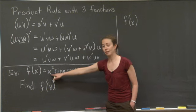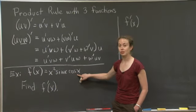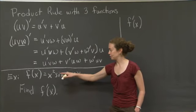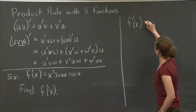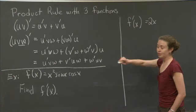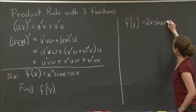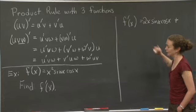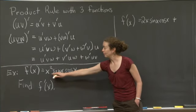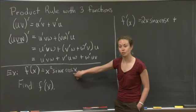So I will determine f prime of x. Now what are our three functions? Well, we have x squared is the first, sine x is the second, cosine x is the third. So we'll have three terms. The first term has to have the derivative of the x squared. That's going to give me a 2x. And I leave the other two terms alone. So I have 2x sine x cosine x, plus, I may want to just write these below.